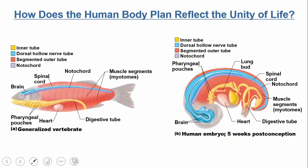Why do we talk about this body plan? It gives a general perspective on how we classify the human body and what qualities it has. Also, looking at an embryonic human, you'll see many of these highlights — it has a lot of similarities to a generalized vertebrate organism, showing the unity of life and how organisms have evolved from common origins.